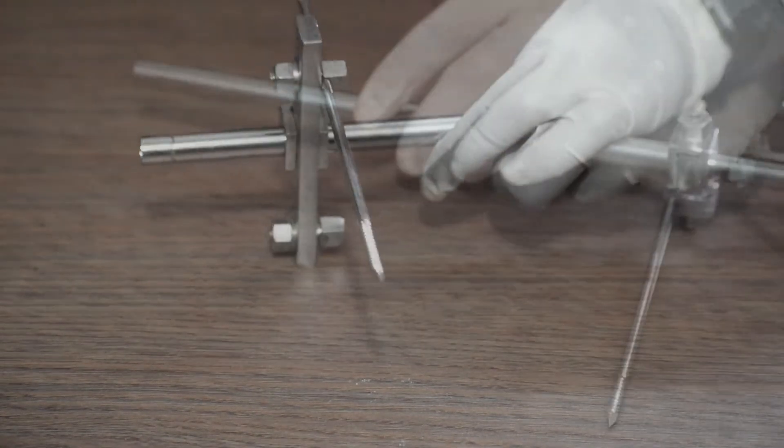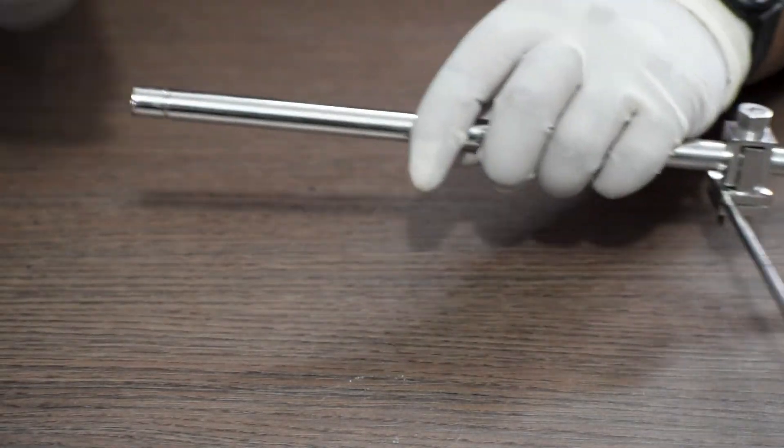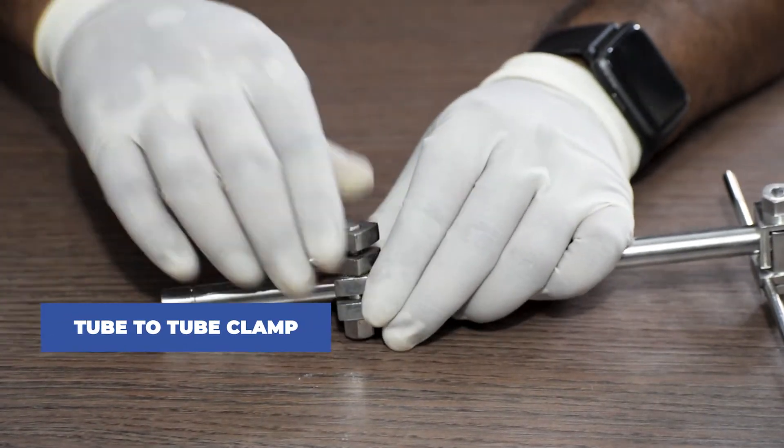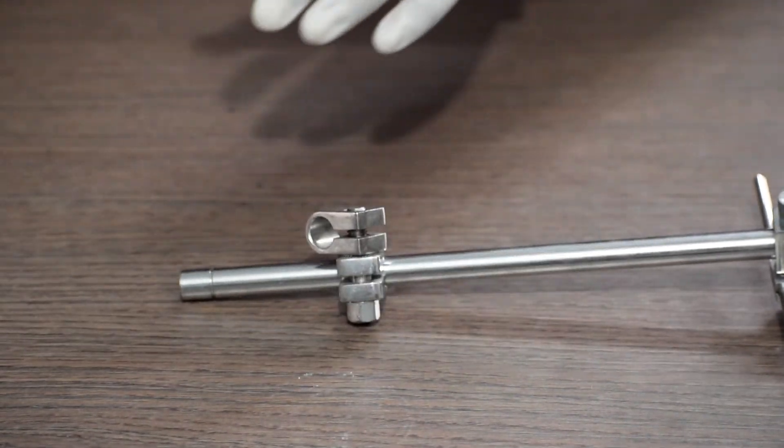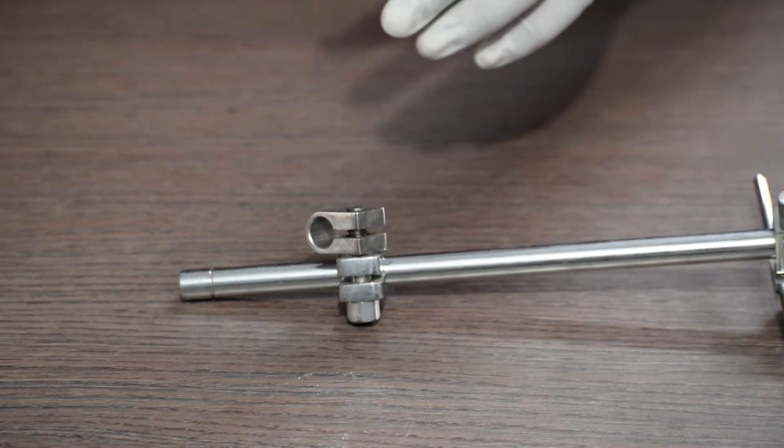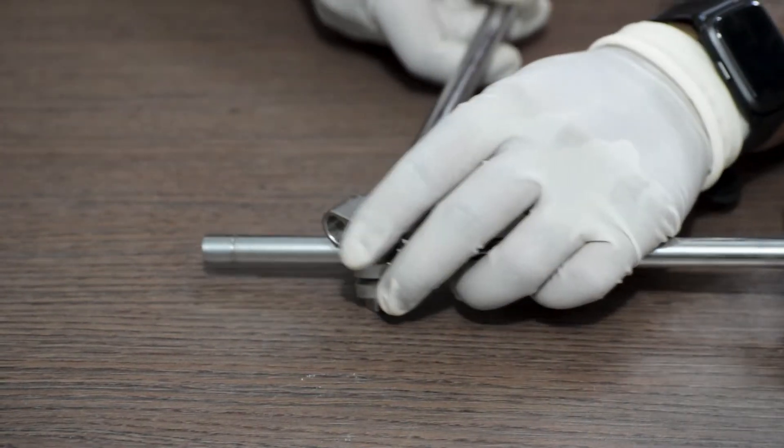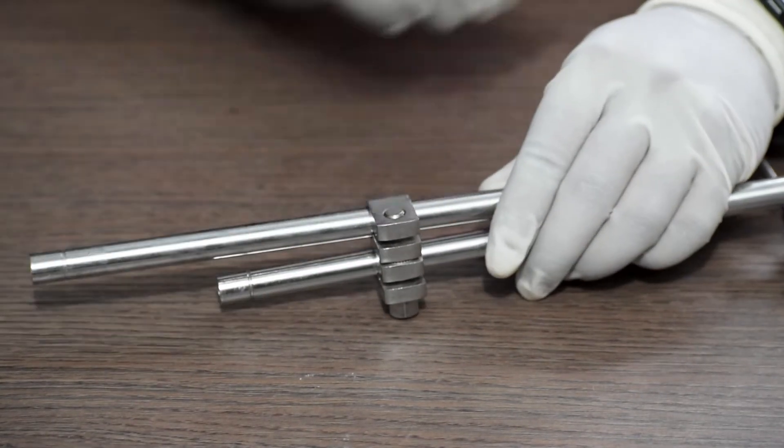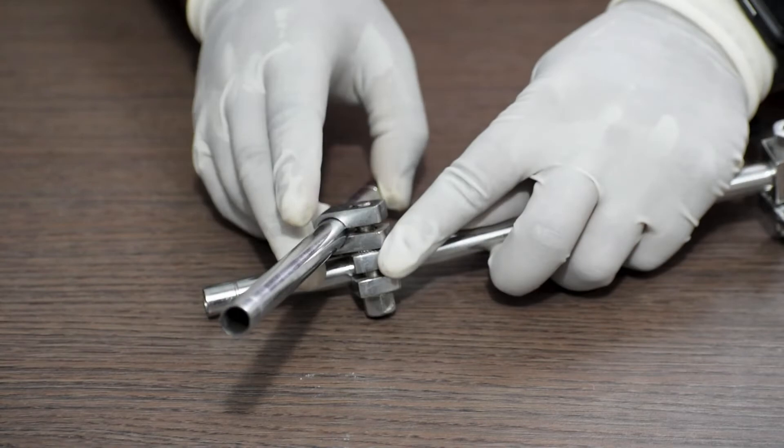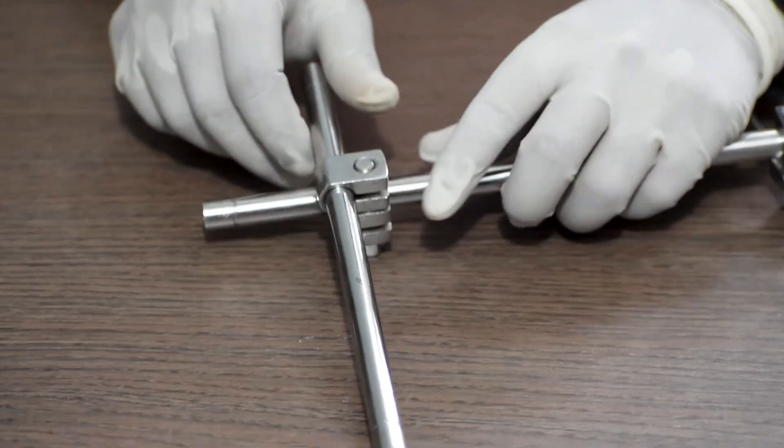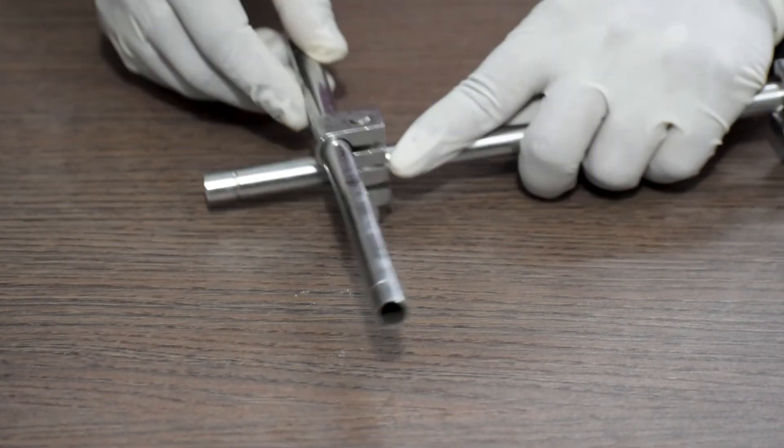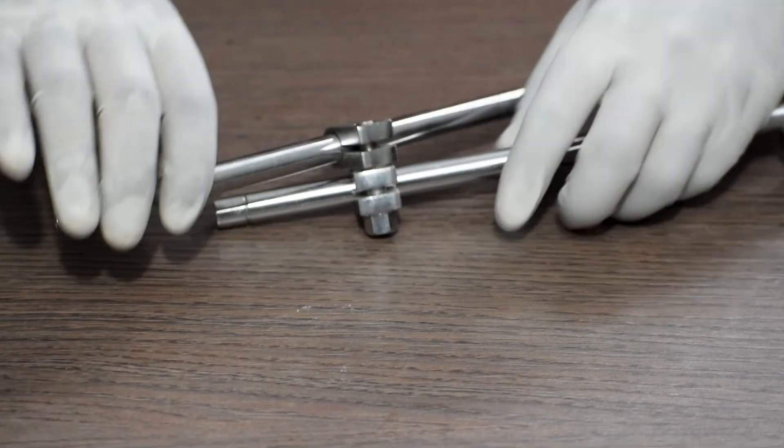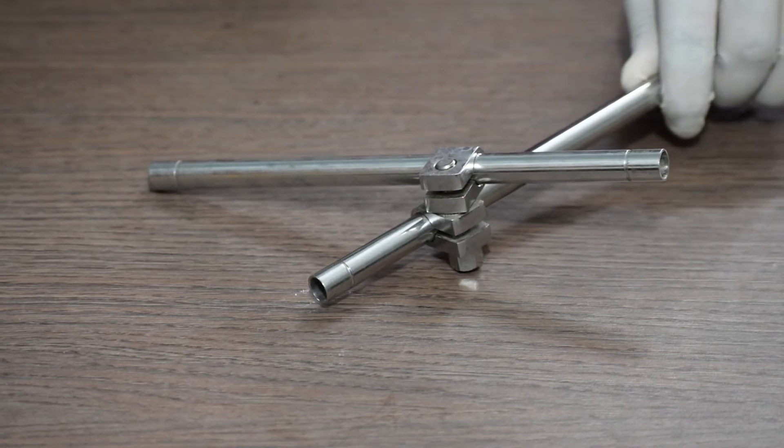Now let us understand the fixation procedure for tube to tube external fixator. We will take the tube to tube clamp, fix it in the tubular rod. This part is adjustable, so you can fix another tubular rod in different angle like this. This is sometime also used to extend or connect another rod in the external fixator.